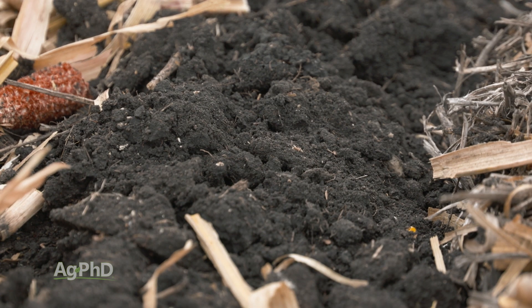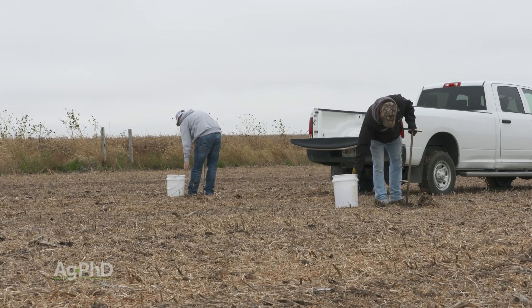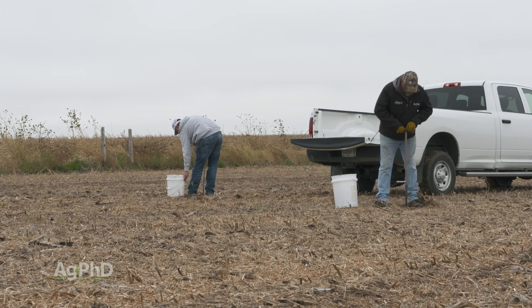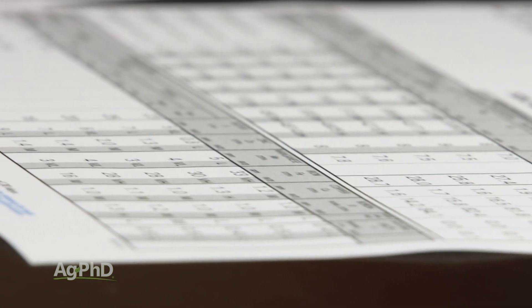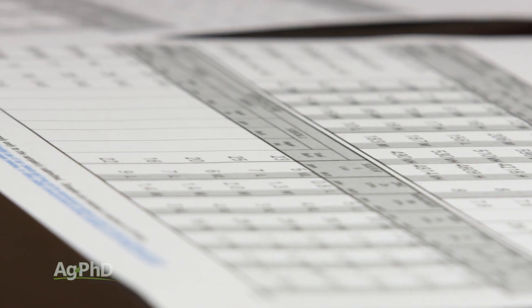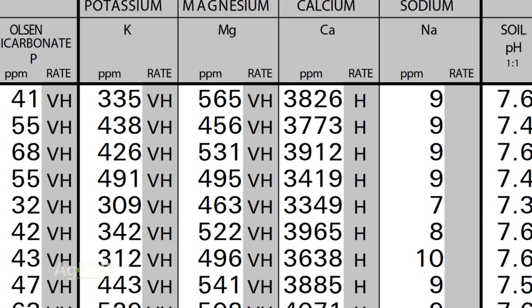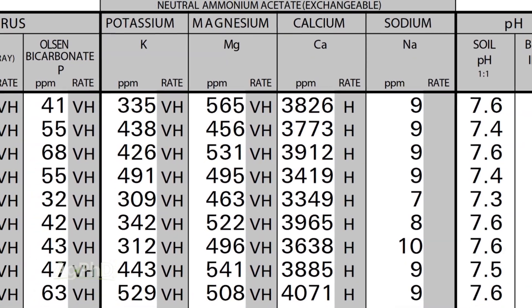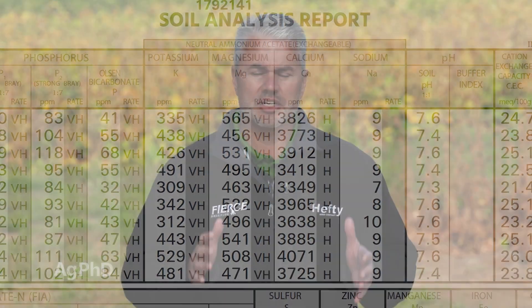As a farmer or agronomist, I want simple. I want to look at a number and know I need to make a change. Without base saturation, you have to look at all those parts per million and figure out whether you have enough calcium. With base saturation, it's very simple: 65 to 75 percent.